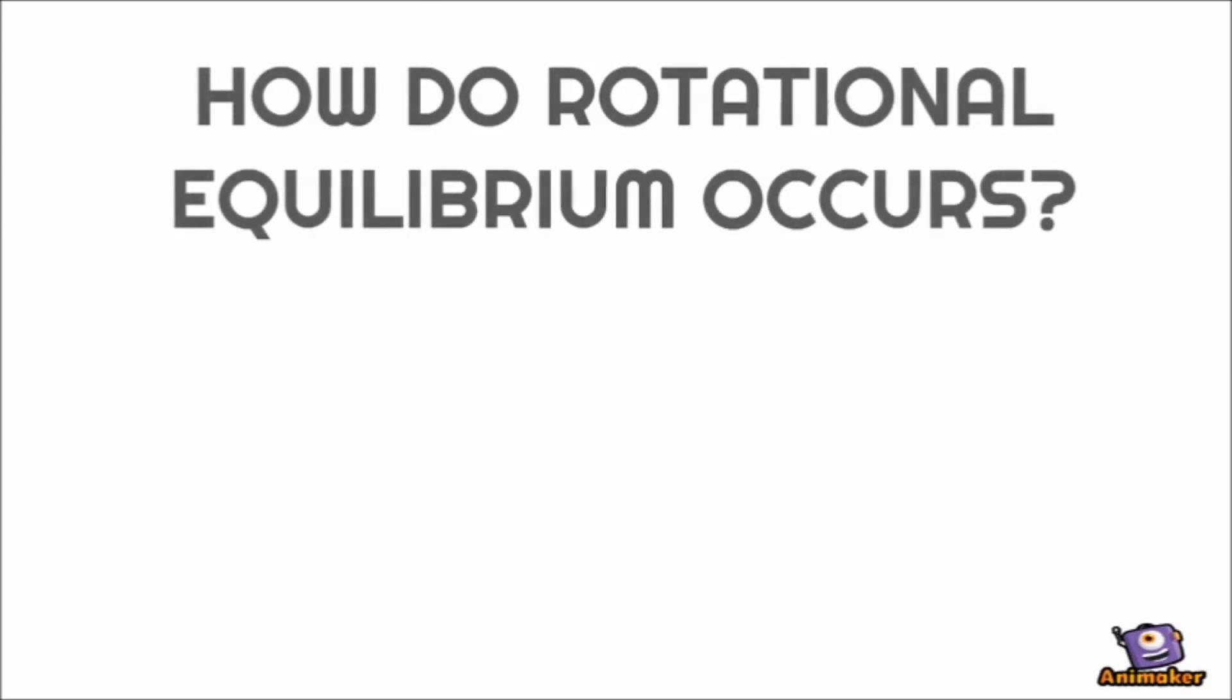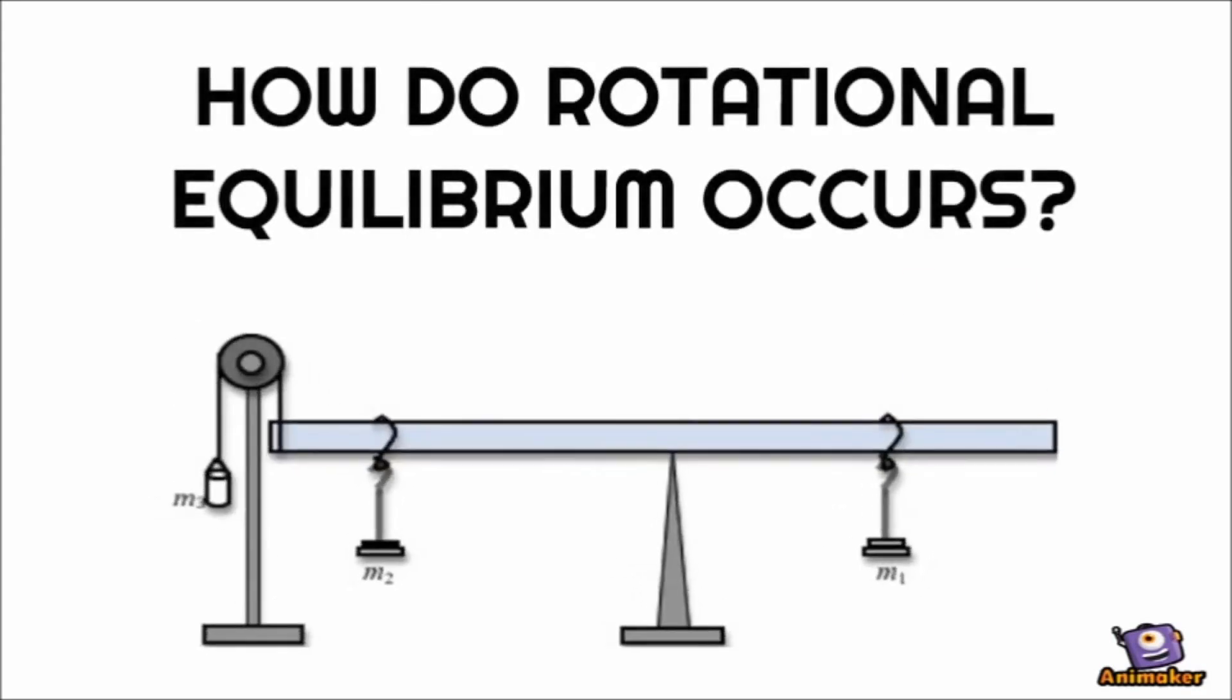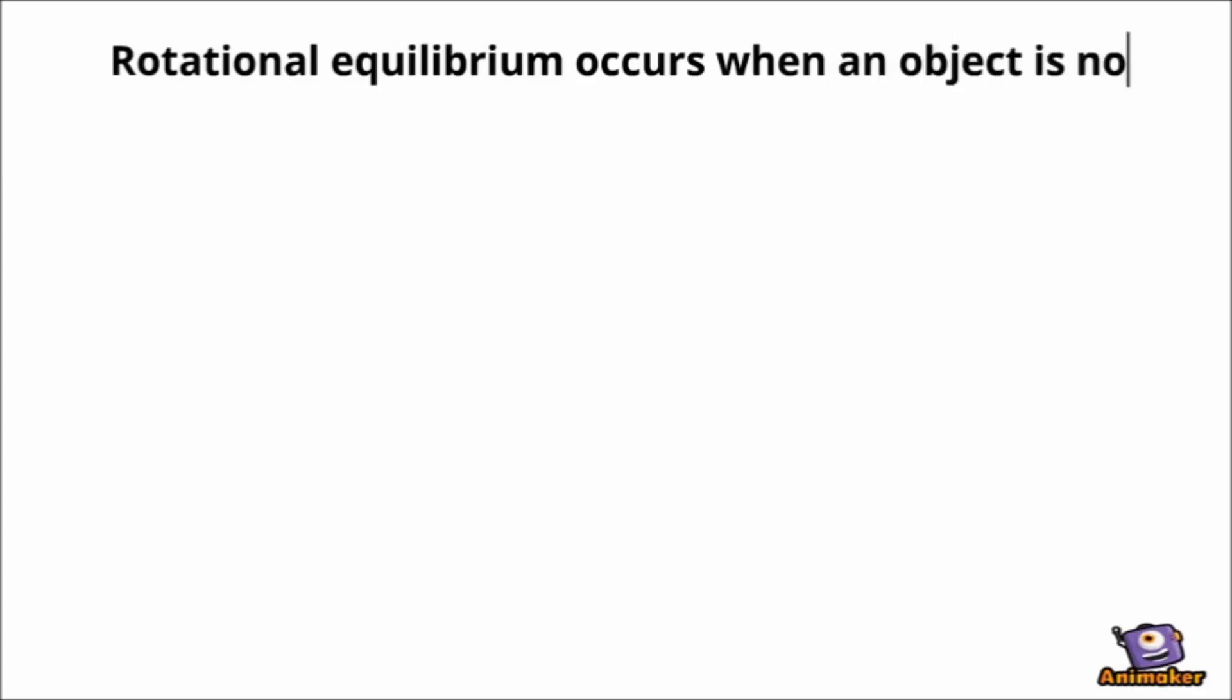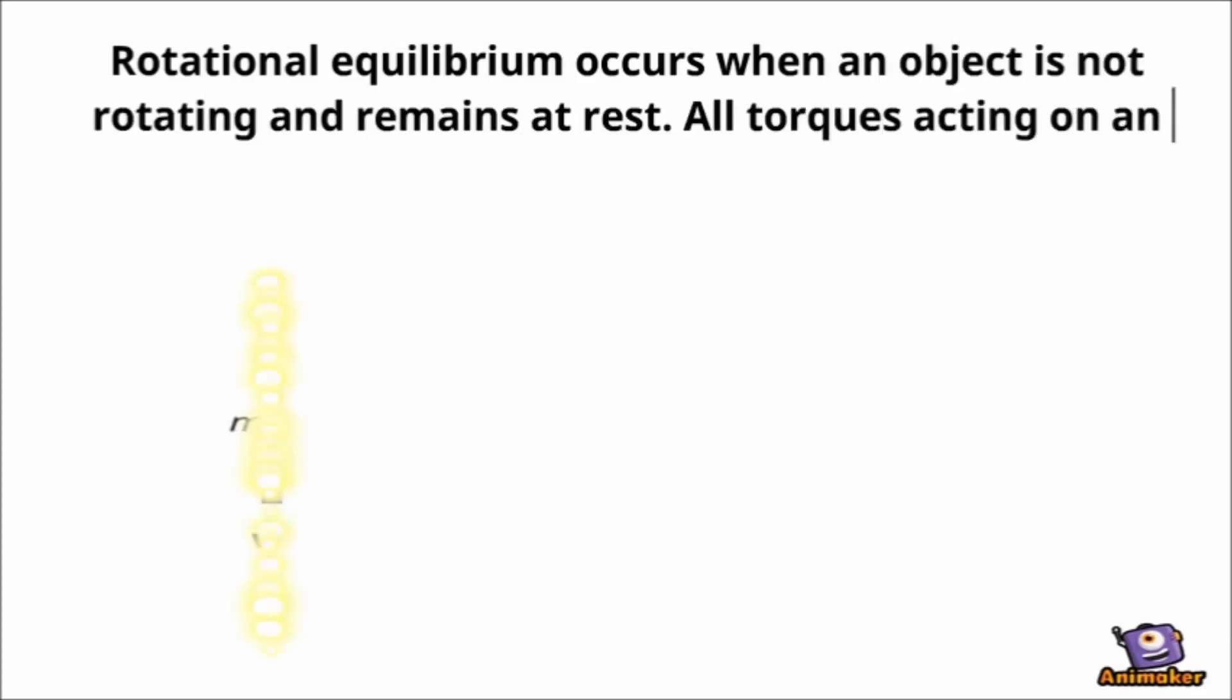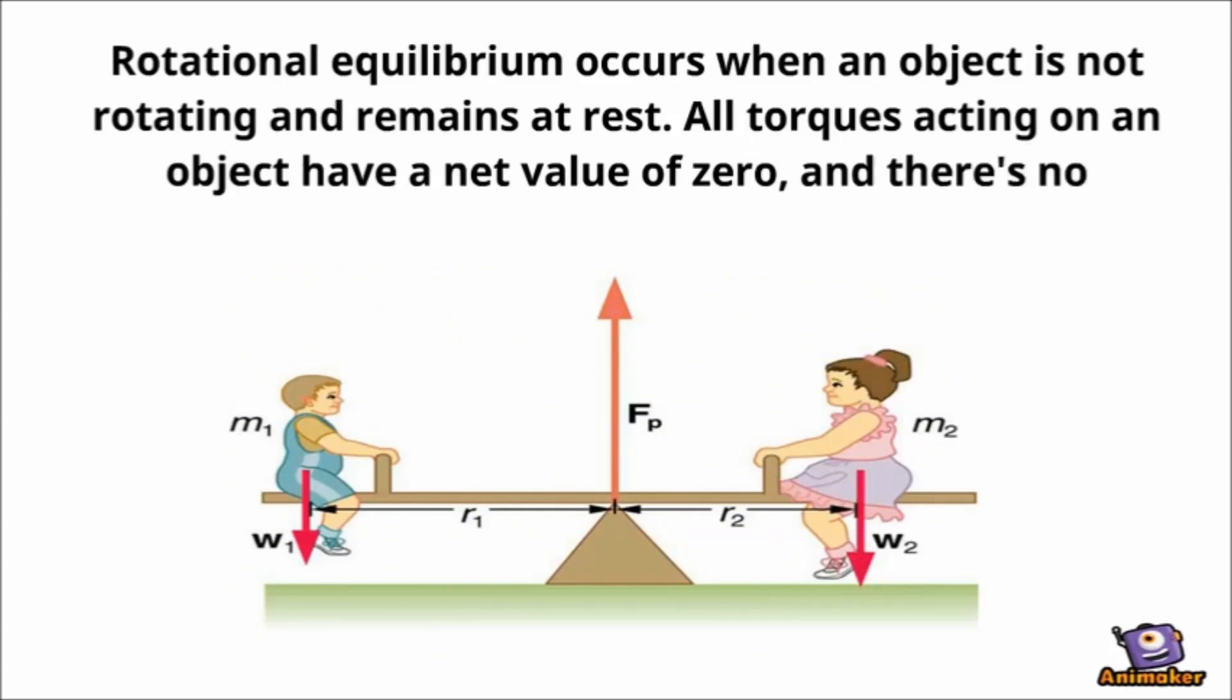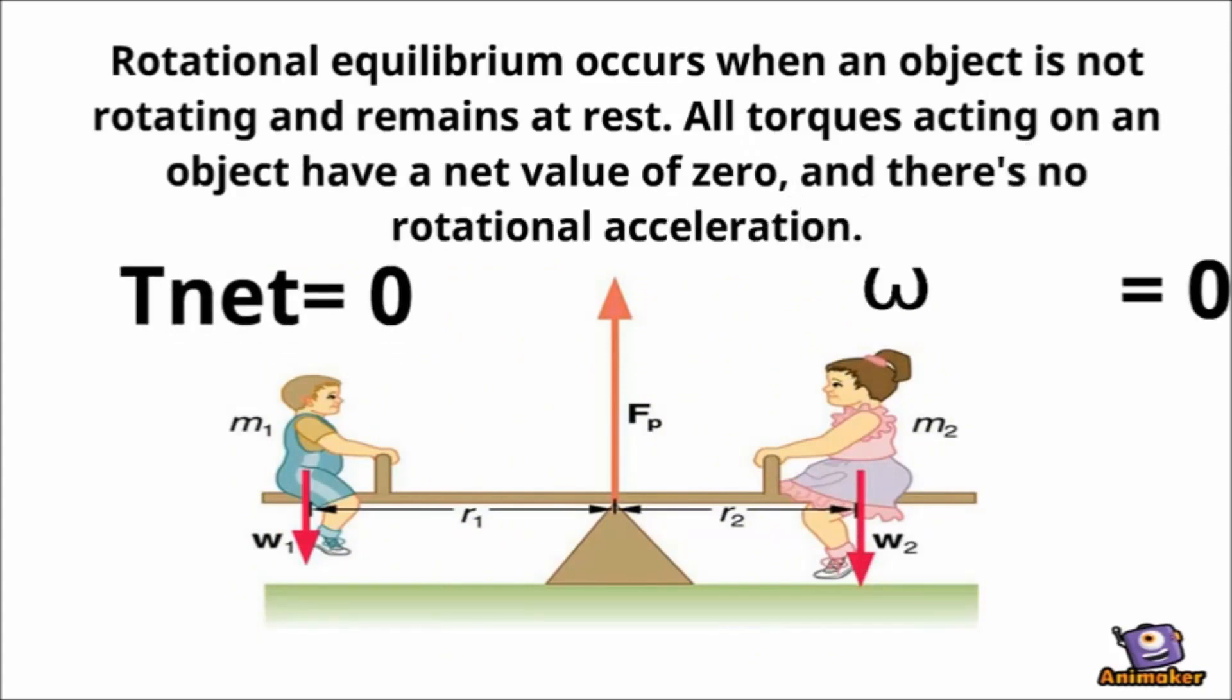How does rotational equilibrium occur? Let us call John to explain. Rotational equilibrium occurs when an object is not rotating and remains at rest. All torques acting on an object have a net value of zero, and there's no rotational acceleration.